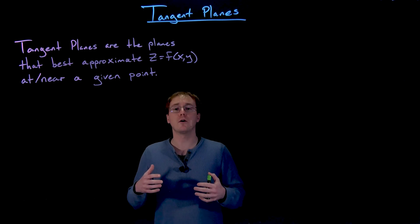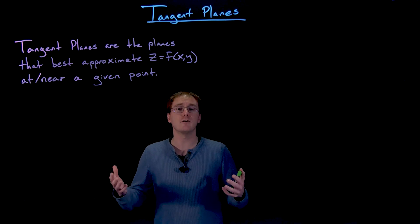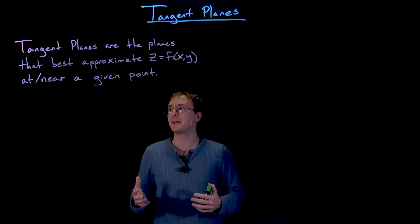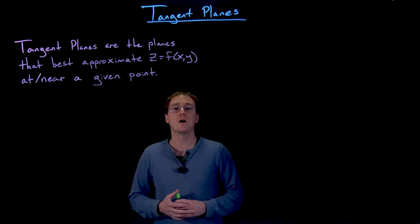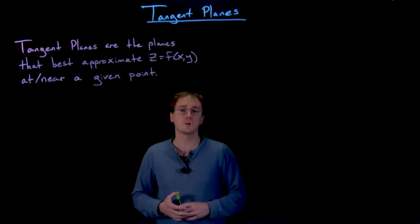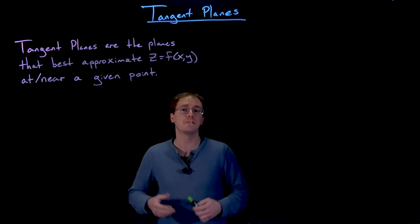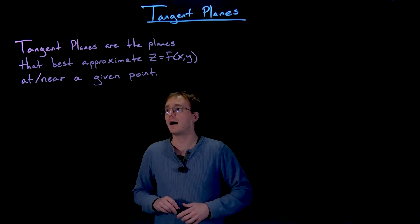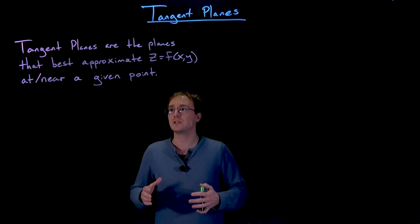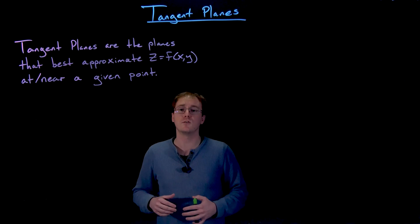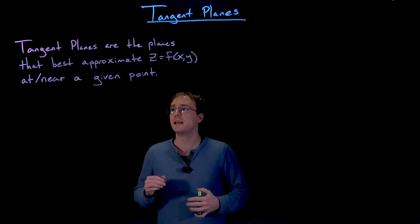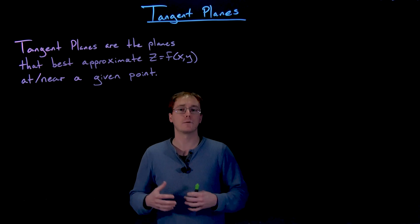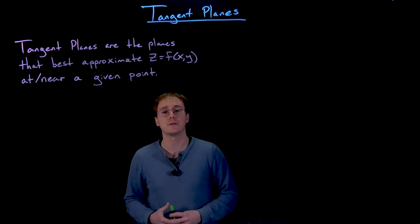The overall idea of a tangent plane is that tangent planes are going to be the planes that best approximate our three-dimensional surface given by a function like z is equal to f of x comma y, and these are going to be the best approximation for our two-variable function at or near a given point — that's the point where we create our tangent plane around.